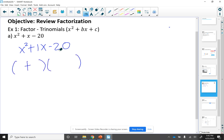One is going to be positive, one is going to be negative. I'm going to have x and x. And now I want factors of 20 that will add up to positive 1. So I'm actually going to list the factors of 20. I have 1 and 20, 2 and 10, and 4 and 5.